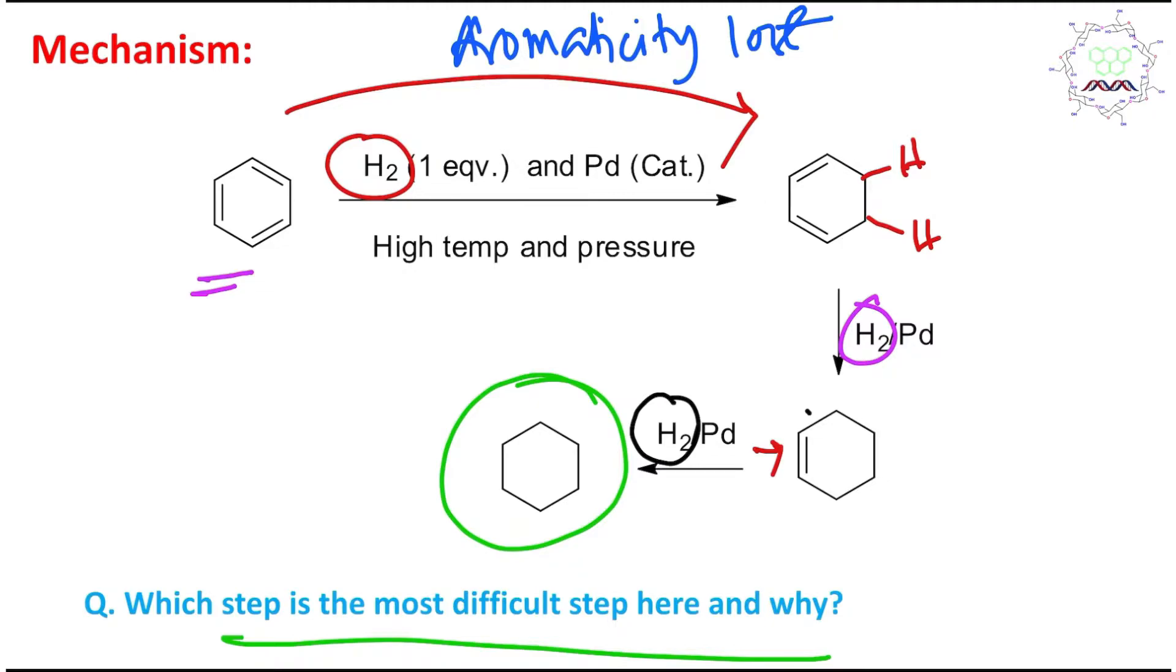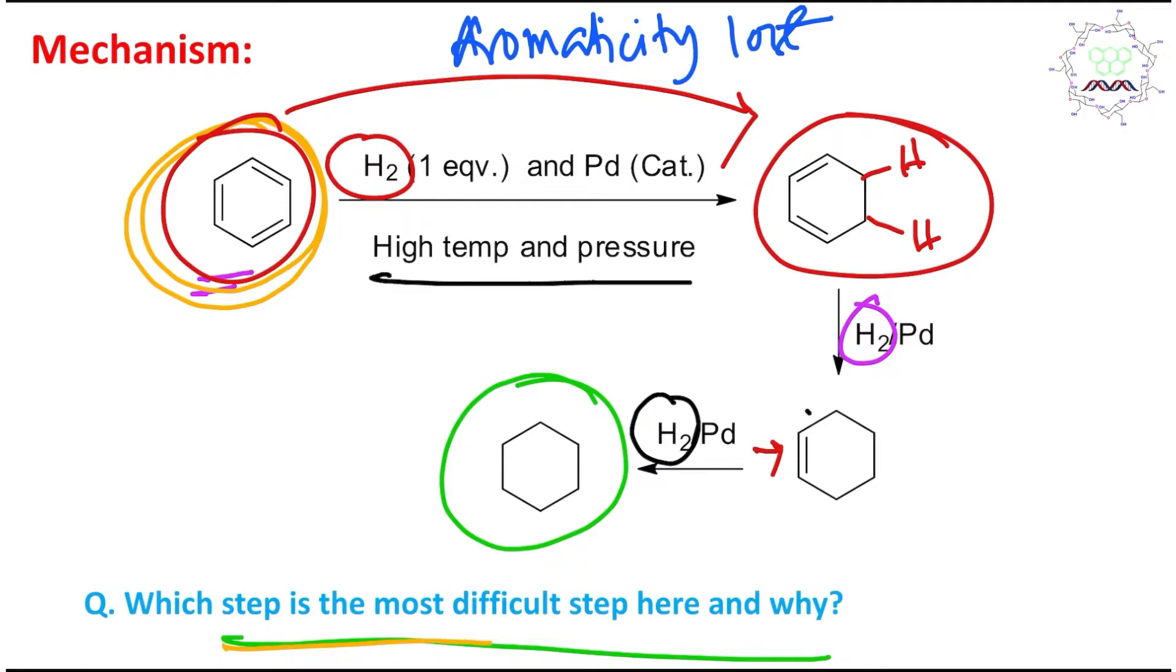You may think that still there is a 1,3-butadiene conjugation. It is true that this has conjugation, but remember aromaticity is huge stabilization, and benzene is highly stable because of aromaticity. Since aromaticity is lost in the first step, this step is most difficult, and for that purpose drastic conditions like high temperature and pressure are essential.